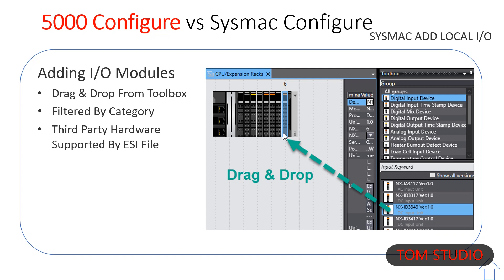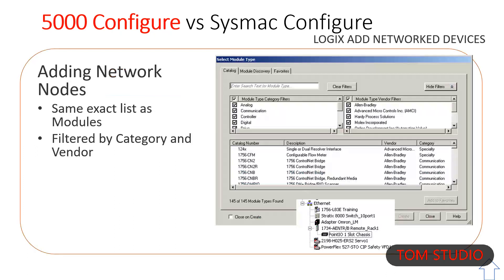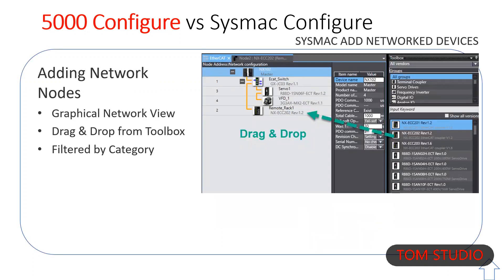For EtherCAT nodes, the default is the latest firmware. Drag and drop to duplicate in the tree. Node setup is accessed in the tree, and nodes can be discovered or scanned when online. Drag and drop to move on the network. Nodes can be discovered, compared, and merged when online. Third-party devices are supported by ESI file.